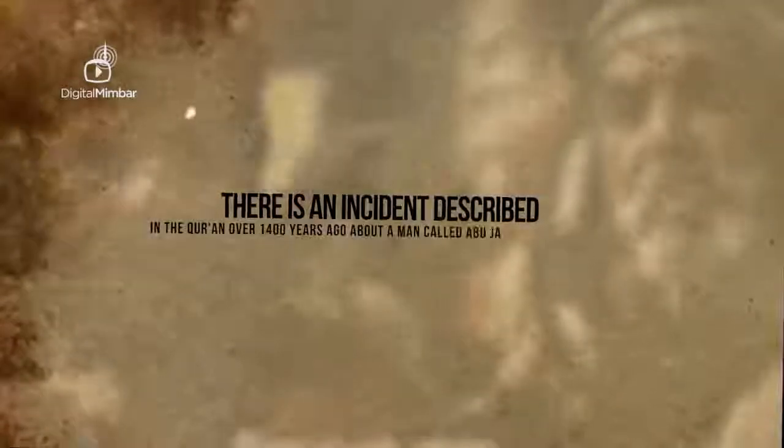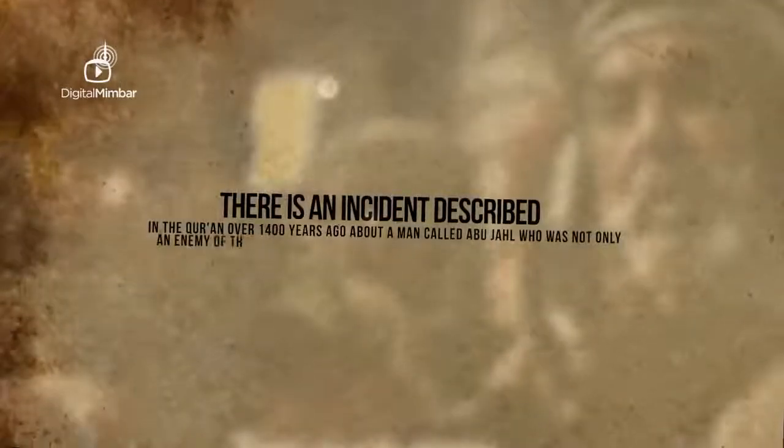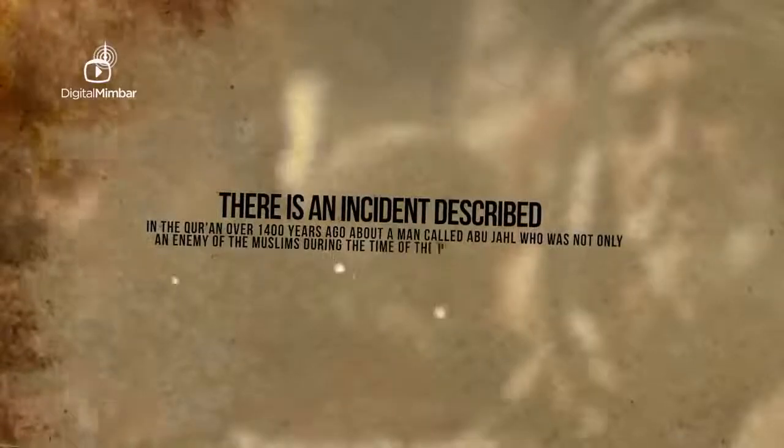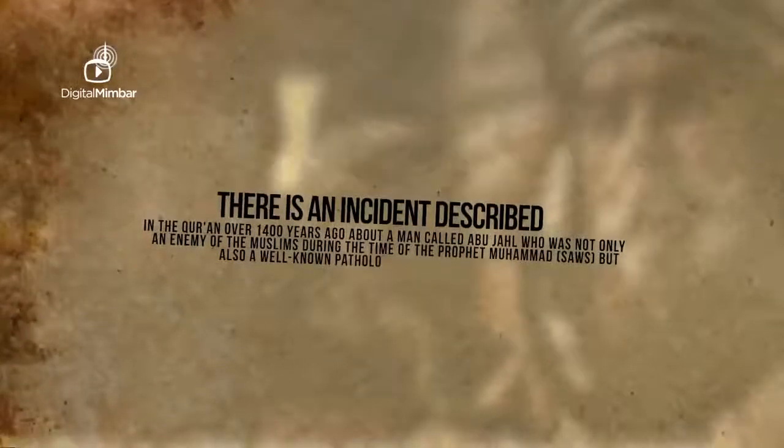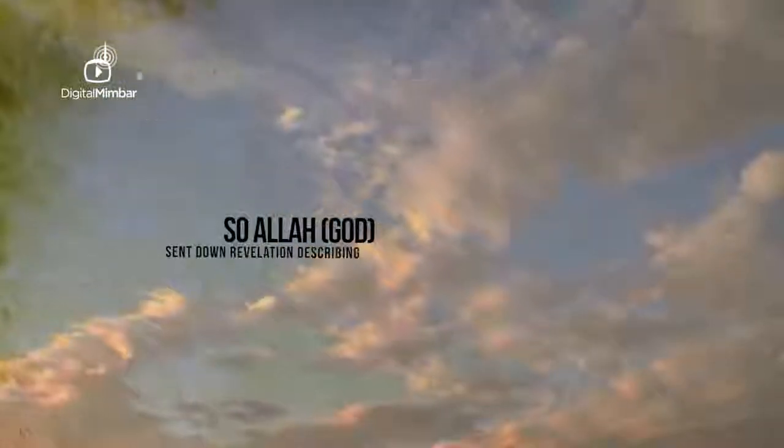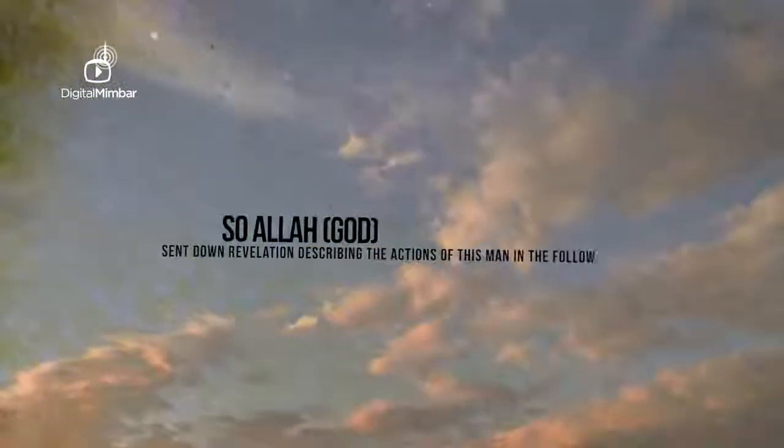There is an incident described in the Quran over 1400 years ago about a man called Abu Jahil who was not only an enemy of the Muslims during the time of the Prophet Muhammad, peace be upon him, but also a well-known pathological liar, compulsive liar. So Allah, God, sent down the revelation describing the actions of this man.